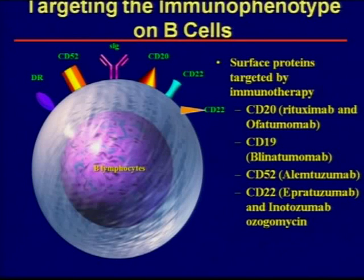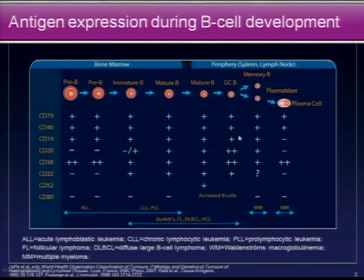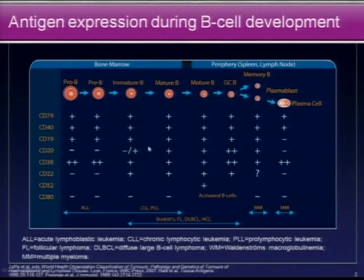It is possible to think about delaying transplant if they achieve MRD negativity, as was shown by Dr. Ritchie's slide on the recent MRD paper from Blood. The other approach is by targeting the immunophenotype. B cells are rich with several immunophenotype markers. We'll talk about CD20, CD19, and CD22. It's important to know antigen expression during B cell development: CD20 is later in development, CD22 is a little earlier, and CD19 is seen throughout B cell development. CD79 is perhaps the most important, though those antibodies are still in phase 1 development.